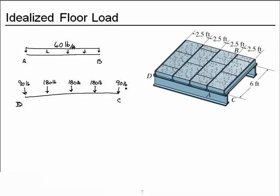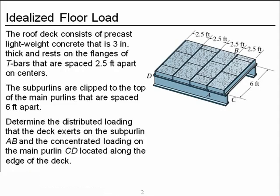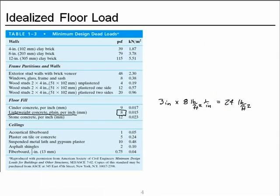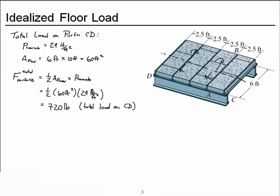Now let's review what it took for us to get here. Our original goal was to convert the distributed load, the self-weight of the concrete panels, into idealized loads acting on the idealized member AB and the idealized loads acting on member CD. We started by saying let's get an idea of the total force acting on member CD as a check at the end. Using help from table 1-3, we found that the concrete panels are 24 pounds per square foot.